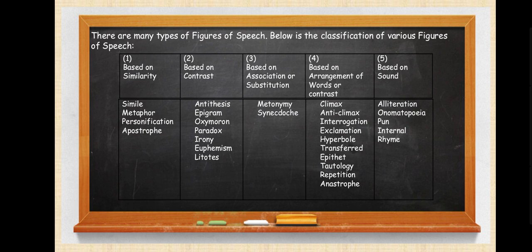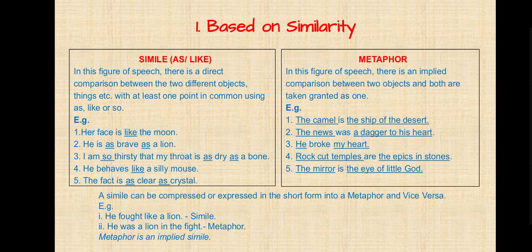Now let's see each and every figure of speech in detail with examples. First, figures of speech based on similarity. The first is simile. In this figure of speech there is a direct comparison between two different objects or things with at least one point in common, using the words 'as,' 'like,' or 'so.' If these three words are used in a line or sentence, then that sentence is called a simile.